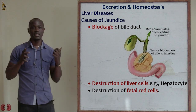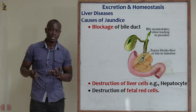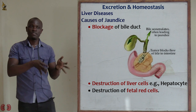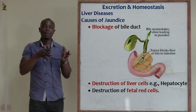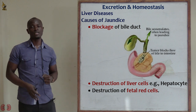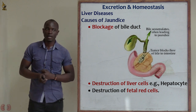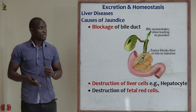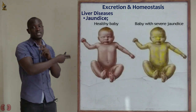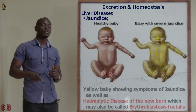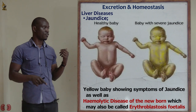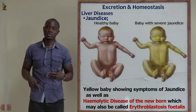Destruction of the liver cells by disease can also lead to jaundice — not only the liver cells, but if body cells are destroyed outside the liver as well. For the fetus, this condition was referred to as erythroblastosis fetalis, which was also called hemolytic disease of the newborn.